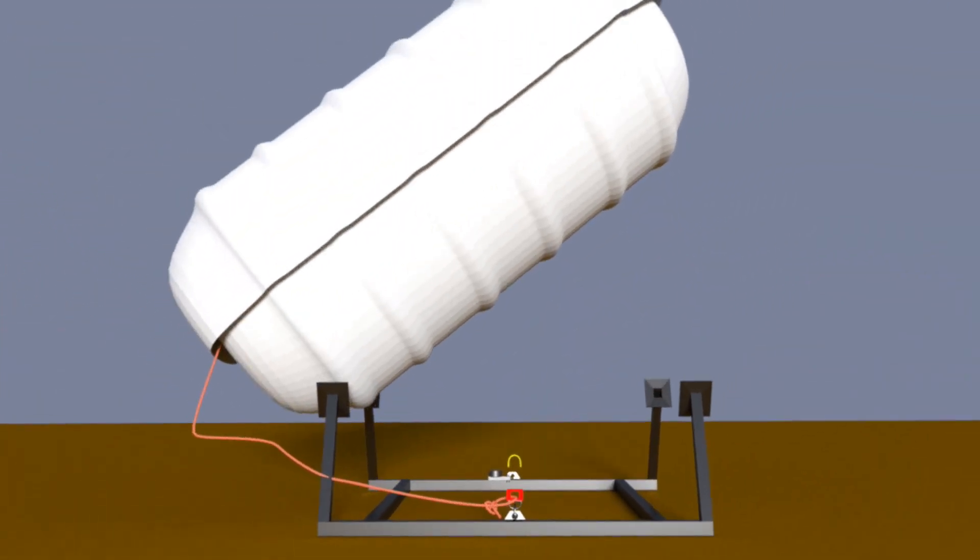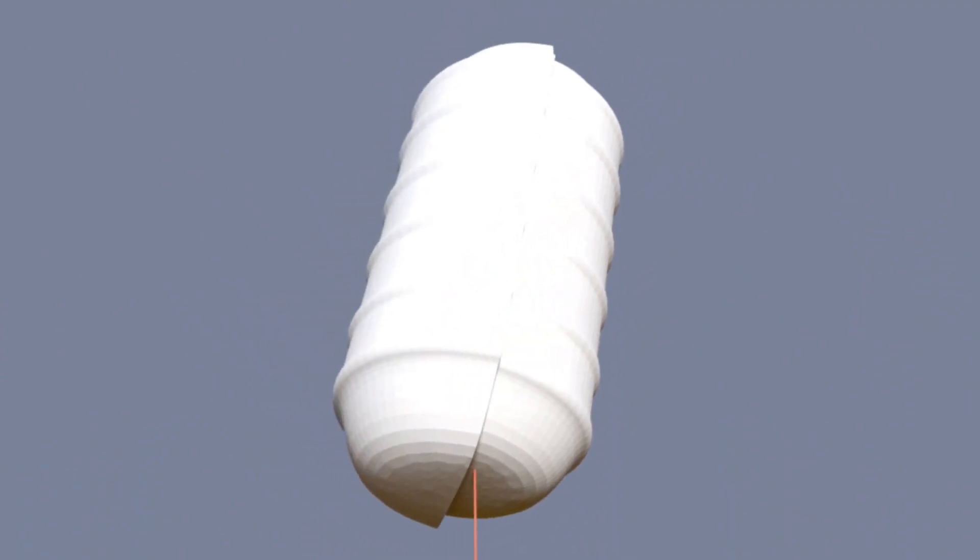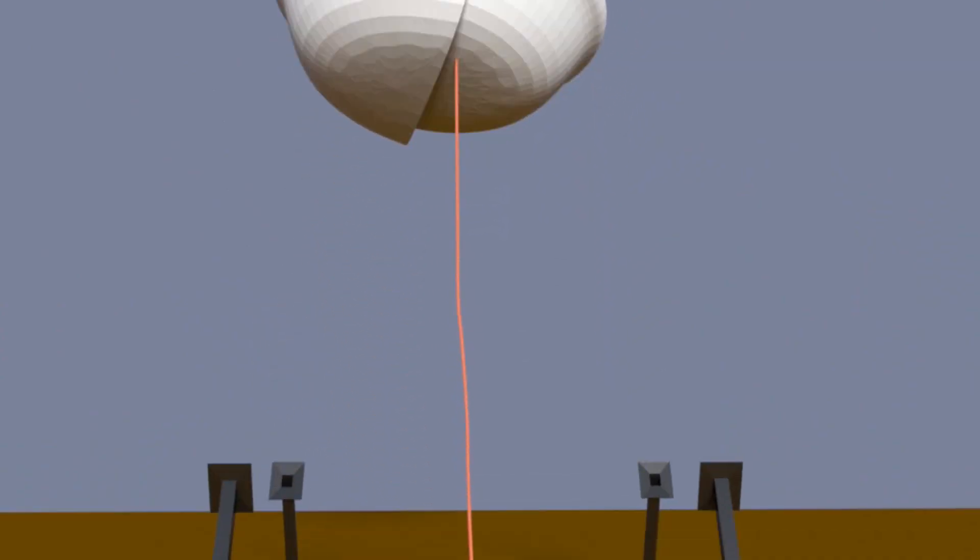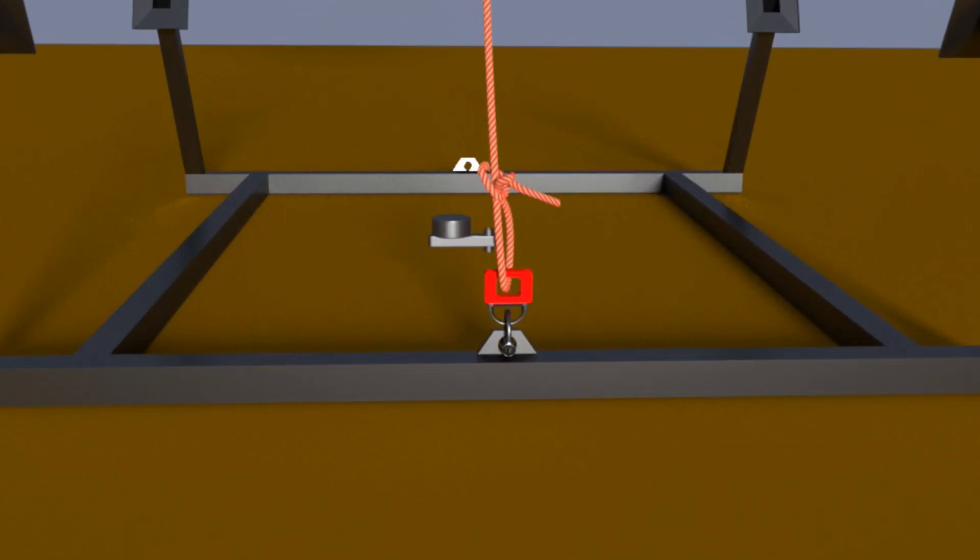As the raft continues up, the painter is pulled tight. This is enough to trigger the inflation of the raft. As the raft inflates, the increased buoyancy applies ever more force to the painter, until eventually the weak link breaks.